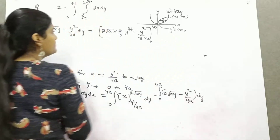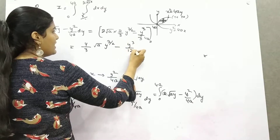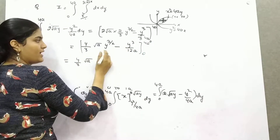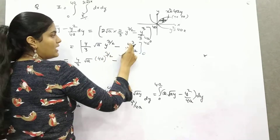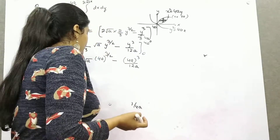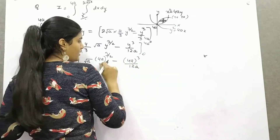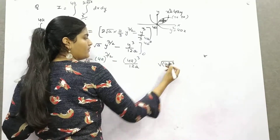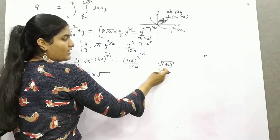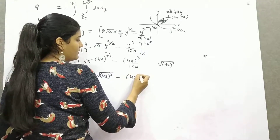Substituting y = 4a as the upper limit: the expression becomes (4/3)√a · (4a)^(3/2) − (4a)³/12a. The lower limit is 0, contributing nothing. Now (4a)^(3/2) = √(4a)³, which equals √(64a³). And (4a)³/12a = 64a³/12a = 16a²/3.